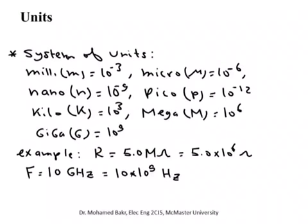Resistor values are usually from a few ohms to a few mega-ohms. Capacitor values start from a few picofarads up to thousands of microfarads — one farad is a huge capacitance. Practical values for inductors are usually around the millihenry range. These are the normal values for inductance, and frequency can be in the gigahertz range.